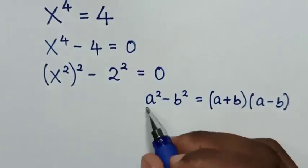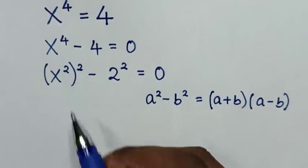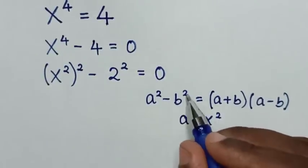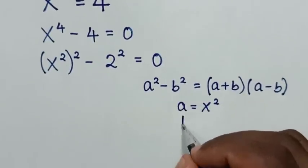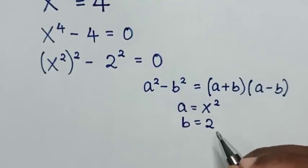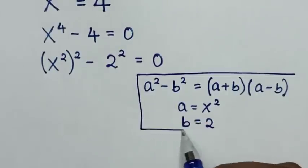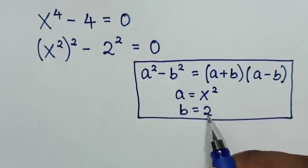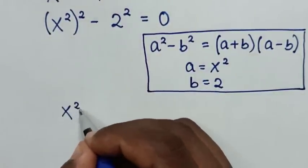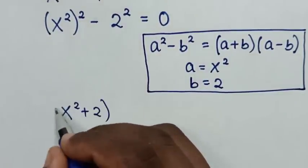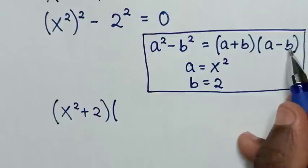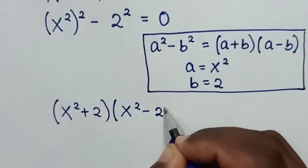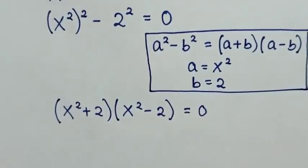When we compare a square with x square bracket square, a is equal to x square. And when we compare b square with 2 square, b is equal to 2. Then our equation will be a plus b, which is x square plus 2, bracket times a minus b, which is x square minus 2, bracket is equal to 0.